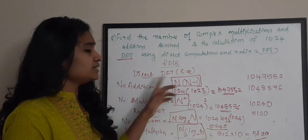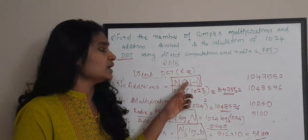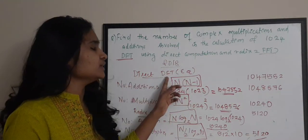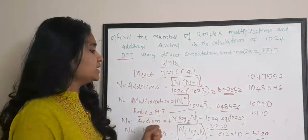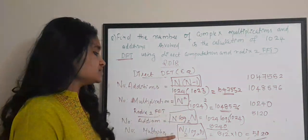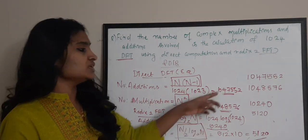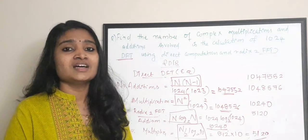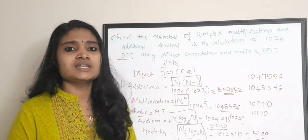To repeat: complex additions = N(N-1) and N² multiplications for direct DFT by equation method. For Radix-2 FFT, complex additions = N log₂ N and complex multiplications = (N/2) log₂ N. The number has greatly reduced, which is why we go for Radix-2 FFT. That's all for this question — let's see the next one.